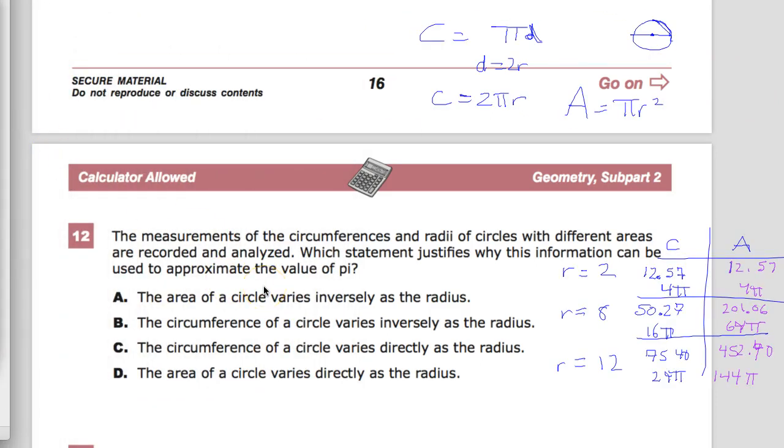Now, let's look at the choices that we have and see if we can do an analysis. The area of the circle varies inversely as the radius. So what they're saying is as the radius size increases, the area of the circle would get smaller. That's what inverse relationships are. And as you can see, the radius increases means the area is going up. So that's totally out.